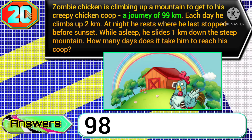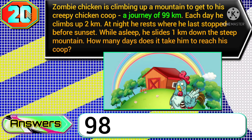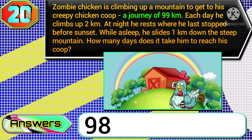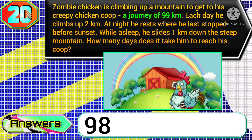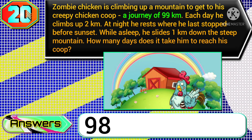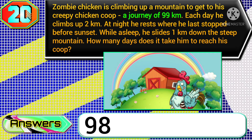Next, in variant two: if you get the question 'a journey of 99 kilometers,' then you need to type the answer 98.